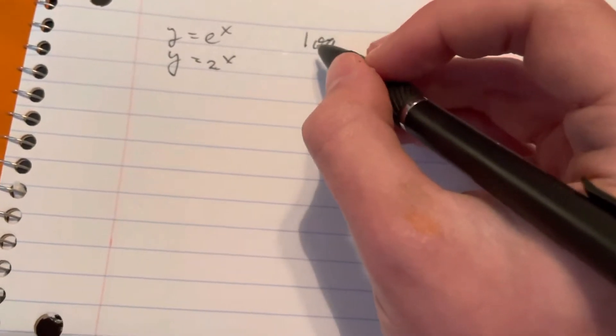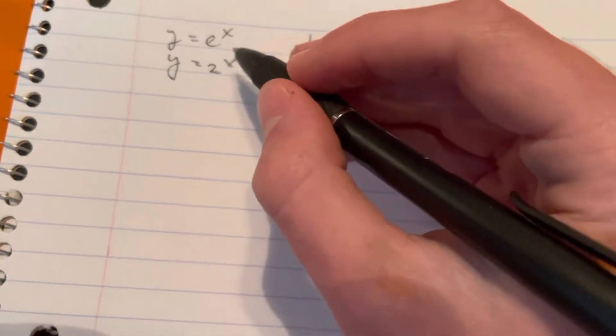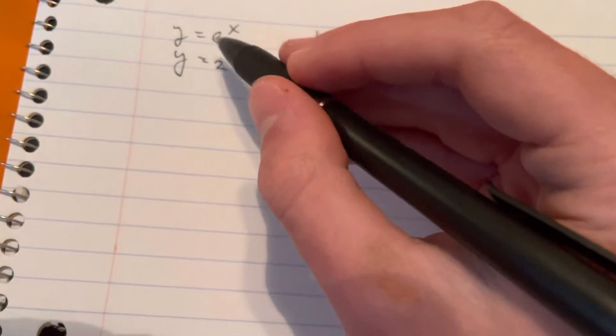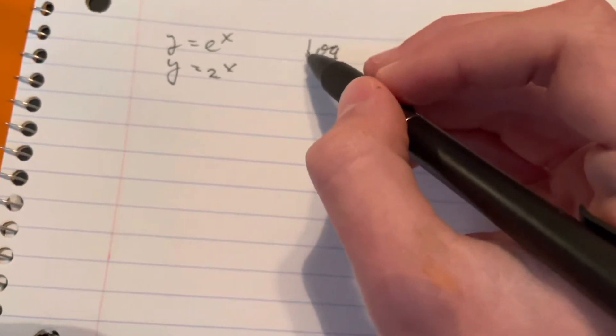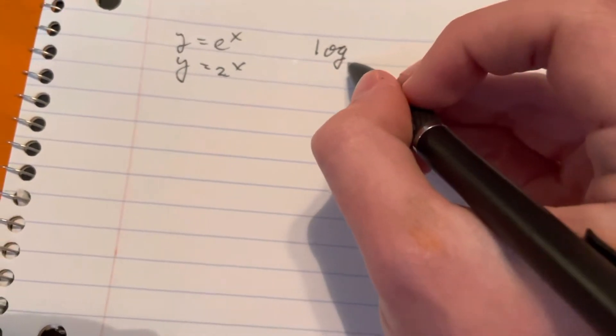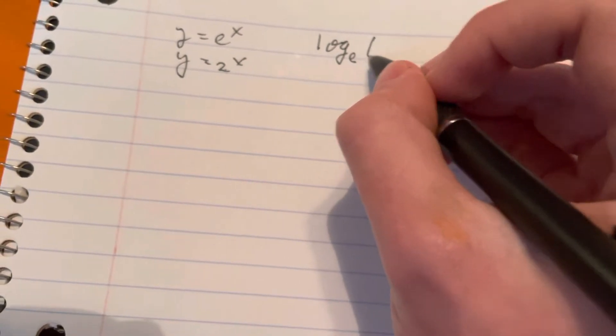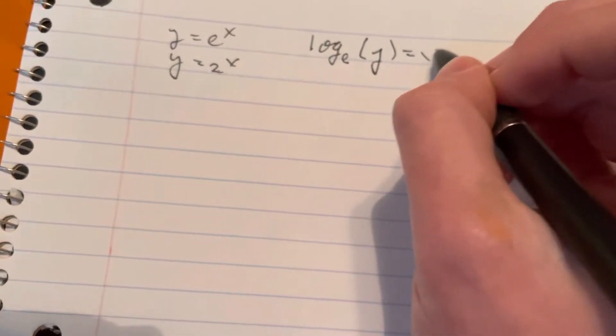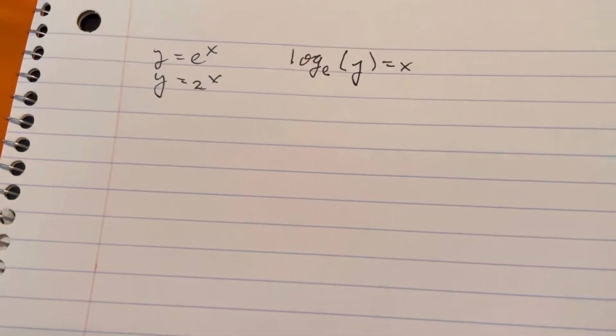If you write log like that, the base of the log is whatever the base of the exponential function is. So you write log base e of y equals x. This is basically asking...